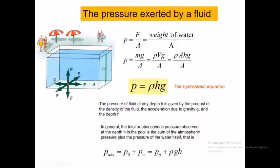The absolute pressure equals atmospheric pressure P0 plus the pressure exerted by the fluid. In this picture, the total pressure at a given point is equal to the sum of atmospheric pressure P0 and the pressure exerted by the water.